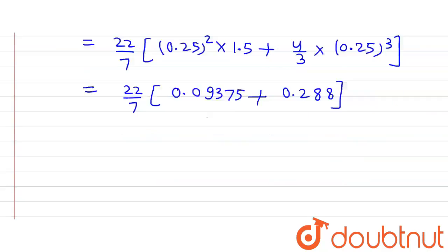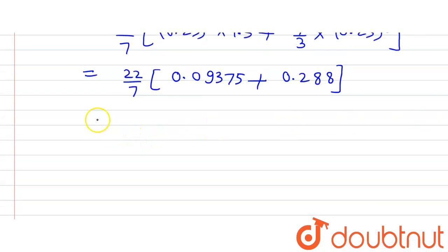On solving it we will get 22/7 multiplied by, this sum is 0.11455. Now on simplifying it further we will get the volume, the capacity of the capsule as 0.36 centimeter cube.